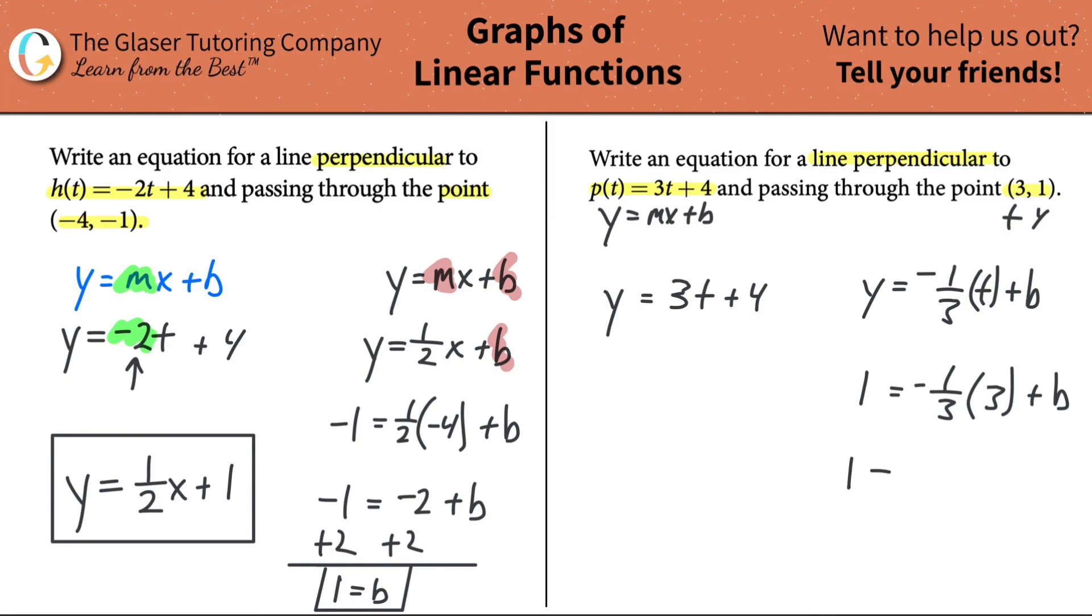So it's going to be 1 = -1/3 of 3, which works out to be -1 plus b. Add the 1 over to the left-hand side and we realize that the y-intercept is 2. Put it all together now: y = -1/3 t + 2. And there you go.